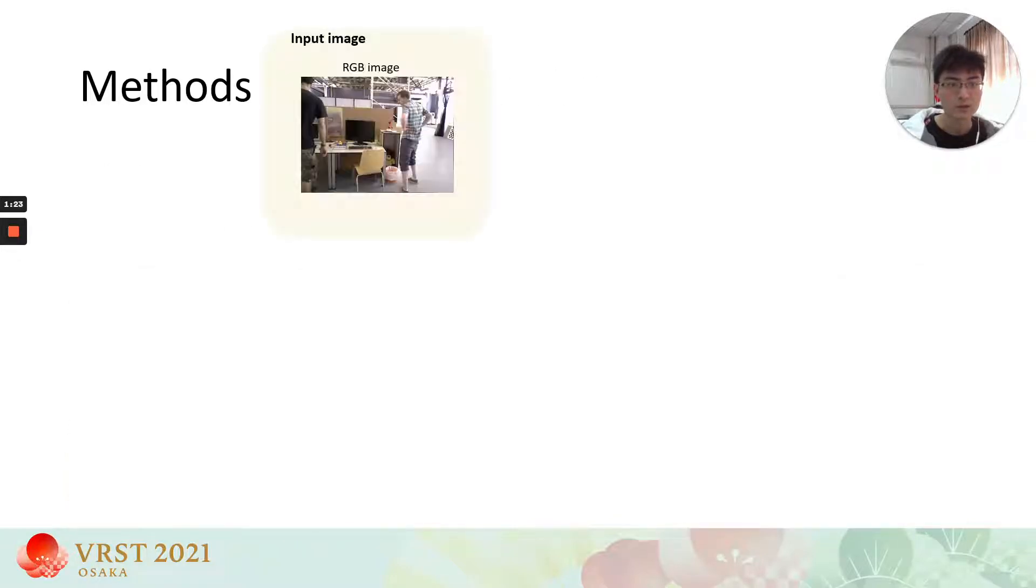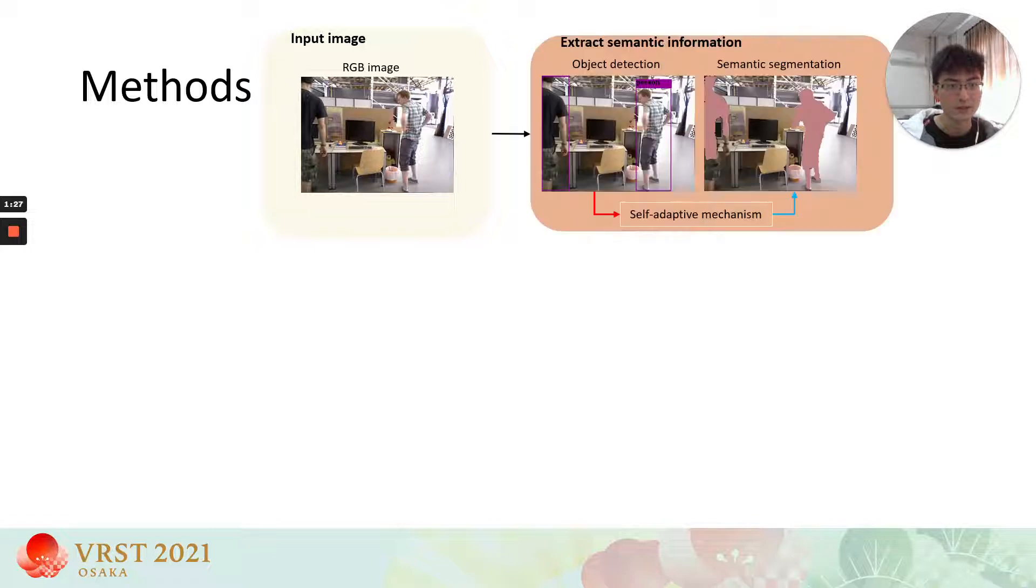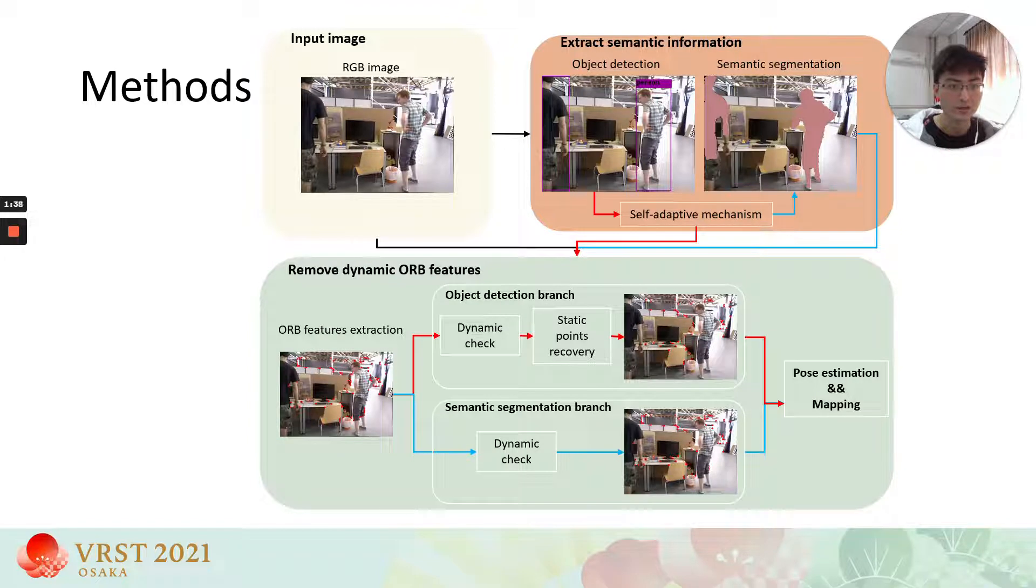First, we use RGB information for subsequent processing. Next, we use semantic segmentation and object detection to obtain the semantic information of the image. Our method consists of two branches, object detection branch and the semantic segmentation branch. A self-adaptive mechanism is used for switching these two branches.